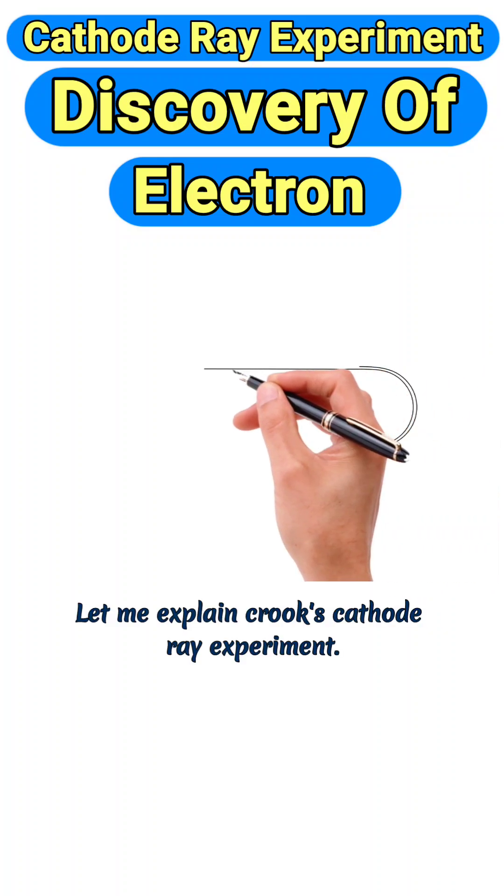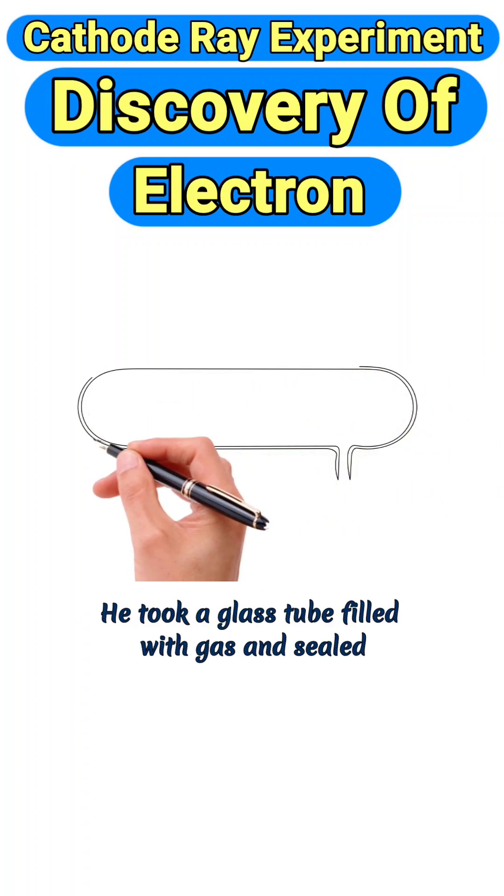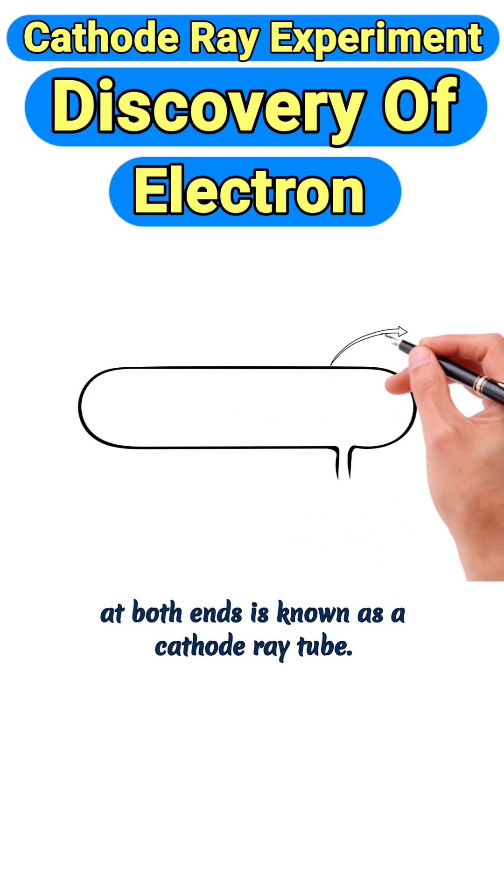Let me explain Crookes' cathode ray experiment. He took a glass tube filled with gas and sealed at both ends, known as a cathode ray tube.